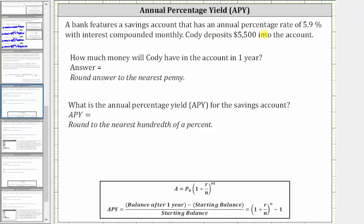A bank features a savings account that has an annual percentage yield of 5.9% with interest compounded monthly. Cody deposits $5,500 into the account. We first want to determine how much money will Cody have in the account in one year, and then what is the annual percentage yield, or APY, for the savings account.